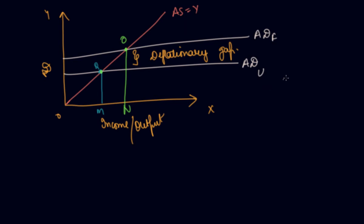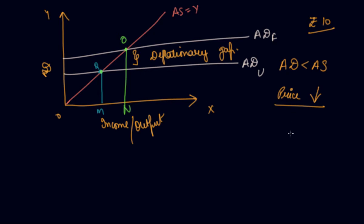Deflation is the general decrease in the price level of a commodity. When your aggregate demand is less than your aggregate supply, supply is more than demand. So a producer will reduce prices in the market — for example, selling at rupees 7 instead of rupees 10 — in order to attract more consumers and increase demand. Ultimately, aggregate demand will equal aggregate supply.